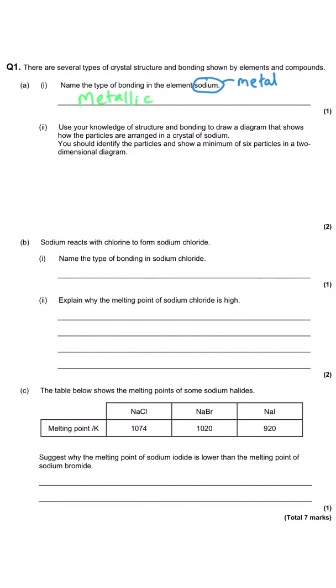Then it says use your knowledge of structure and bonding to draw a diagram showing how the particles are arranged in a crystal of sodium, identifying the particles showing a minimum of six in two dimensions. Since it is metallic bonding, we are showing a regular lattice of metal ions. I suggest you draw six, a grid of two layers of three, you won't get more marks for drawing more and don't worry about trying to show perspective.